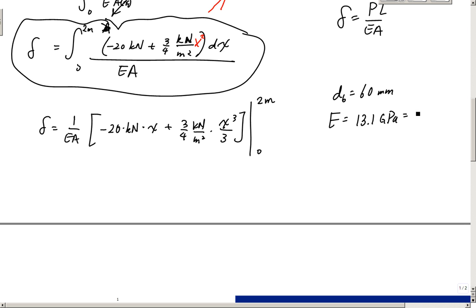Just remember, a GPA is the same as 13.1 kilonewtons per millimeter squared, which is also the same as 13.1 times 10 to the 9th newtons per meter squared, and it's also the same as 13.1 times 10 to the 6 kilonewtons per meter squared. Or 10 to the 6 newtons per millimeter squared.